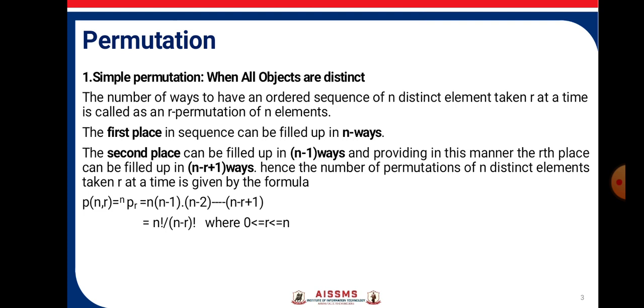And providing in this manner, the rth place can be filled up in n-r+1 ways. Hence, the number of permutations of n distinct elements taken r at a time is given by the formula n! / (n-r)!.